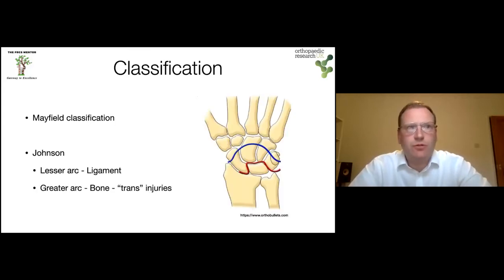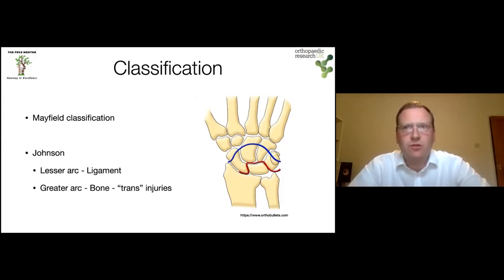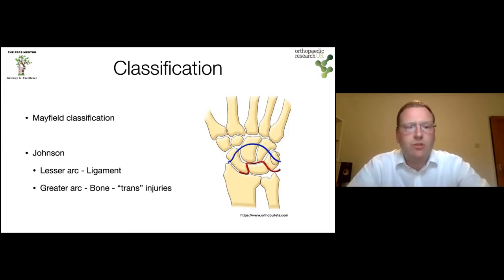In the same year, Johnson divided these into lesser and greater arc injuries. Lesser arc begins with an L and ligament begins with an L — so the lesser arc injury is a pure soft tissue injury, shown as the red line. The greater arc injuries involve bony injuries — the blue line — and carry the prefix 'trans', so a radial fracture gives a trans-radial injury, a scaphoid fracture gives a trans-scaphoid injury.